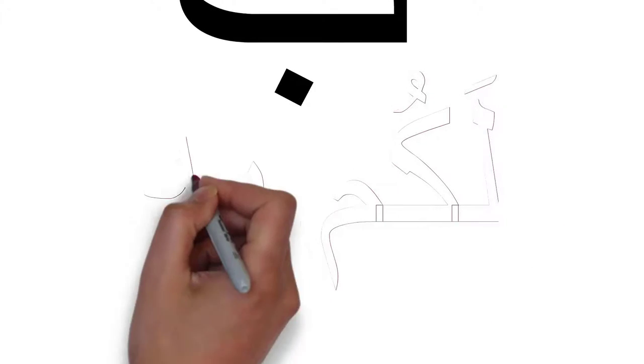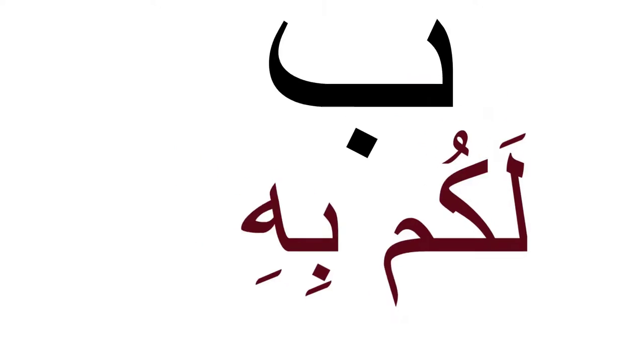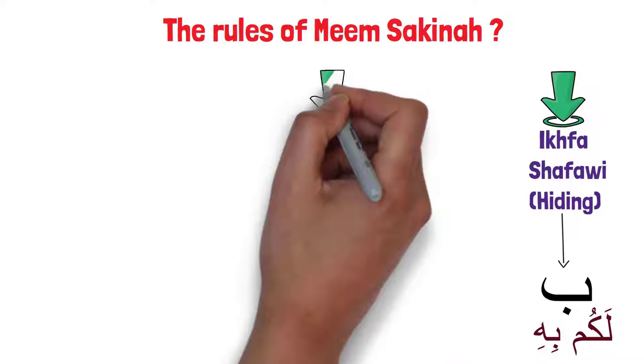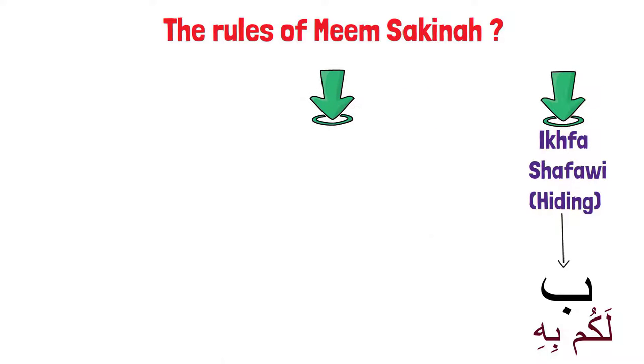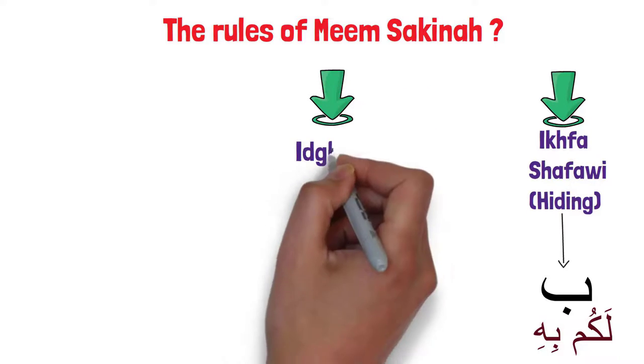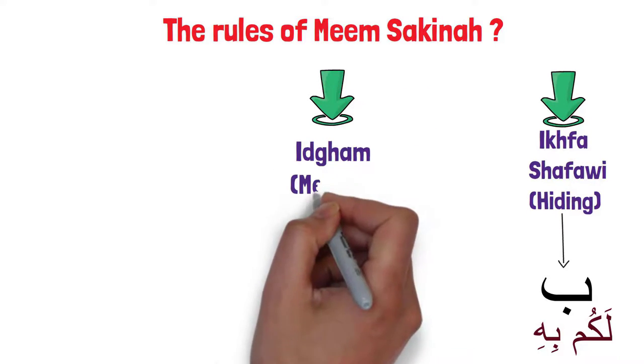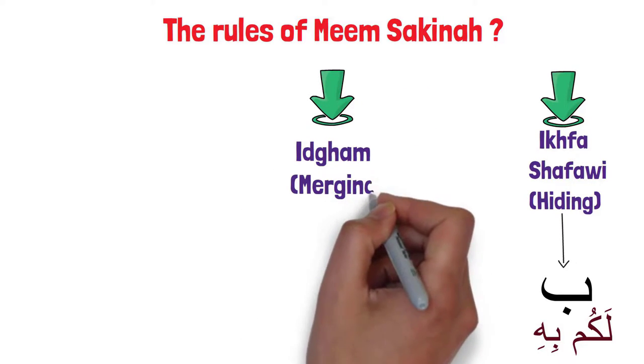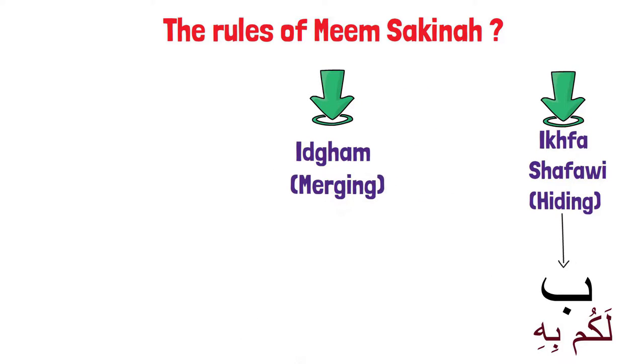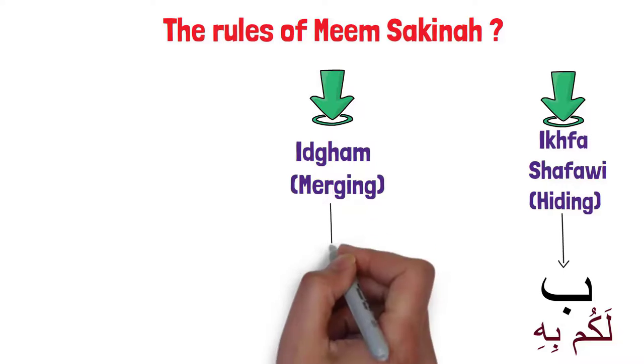The second one is إضغام, and it happens whenever there is Meem Sakinah followed by Meem also, like بكم من.